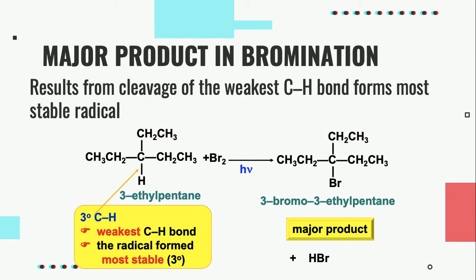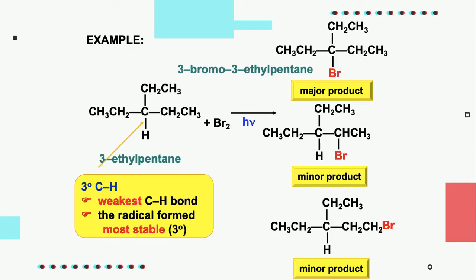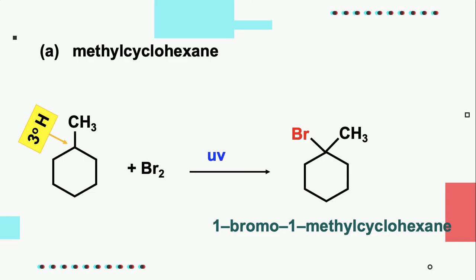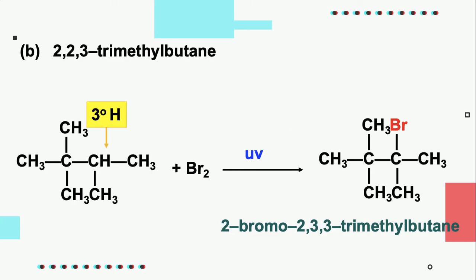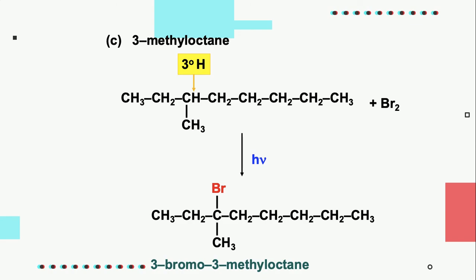The major product in bromination results from cleavage of the weaker C-H bond, which eventually forms the most stable radical. The replacement of H that leads to the most stable radical can be seen in methylcyclohexane, 2,2,3-trimethylbutane, and 3-methyloctane.